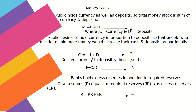Currency equals Cd times D, where Cd is the currency-to-deposit ratio. So currency = Cd × D, and the desired currency-to-deposit ratio is C/D. Banks hold excess reserves but also have required reserves, so total reserves of the bank equals required reserves plus excess reserves.